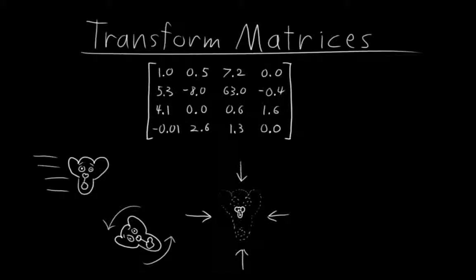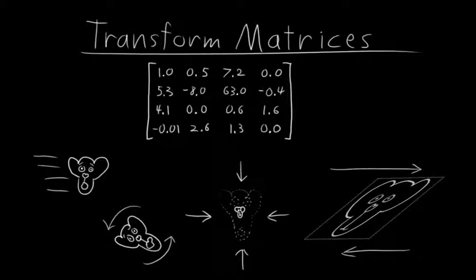Not only that, but transform matrices can also represent things like shear. Basically, they're the mother of all transformation representations as far as flexibility goes.